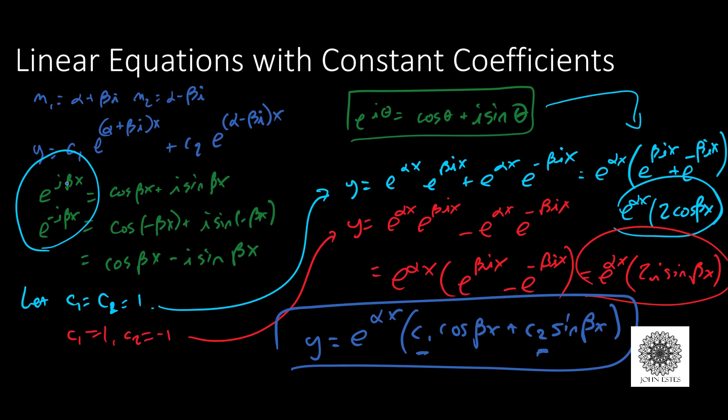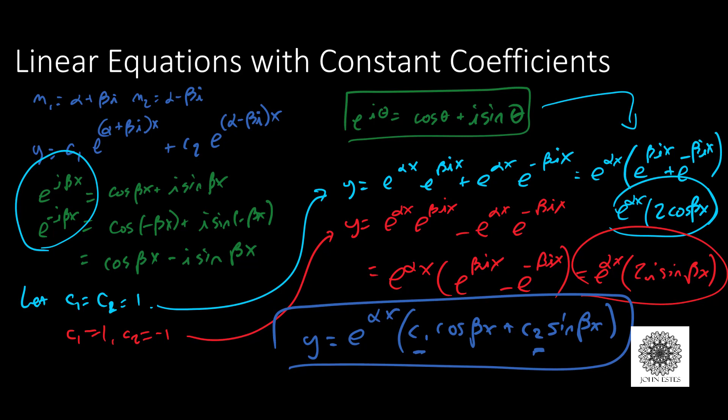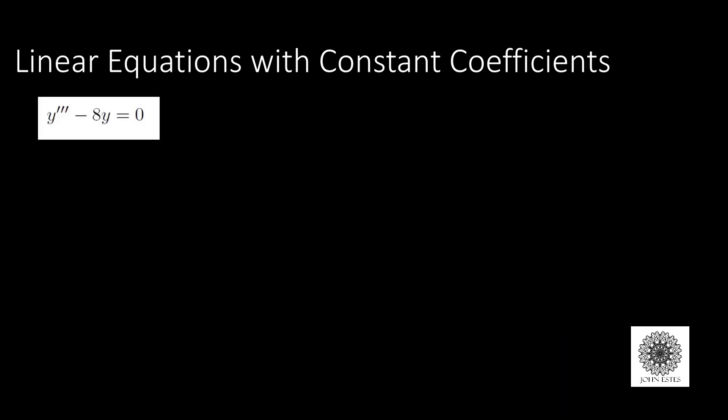Let's look at an example. We have y triple prime minus 8y equals 0. This is definitely a higher-order linear equation with constant coefficients and it's homogeneous. The auxiliary equation is m cubed minus 8 equals 0.